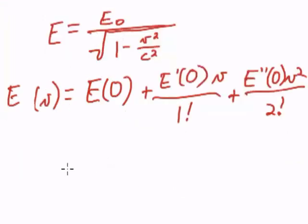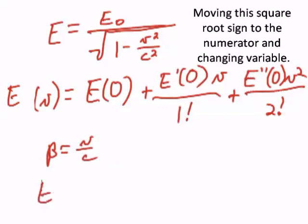So first I'm going to make a change in variables beta equals V over C, then E as a function of beta is going to be equal to E sub 0 times 1 minus beta squared to the power of negative 1 half.